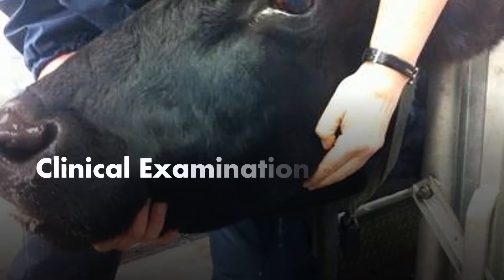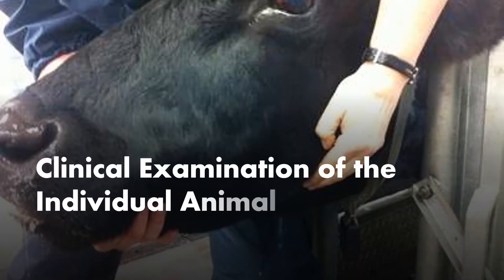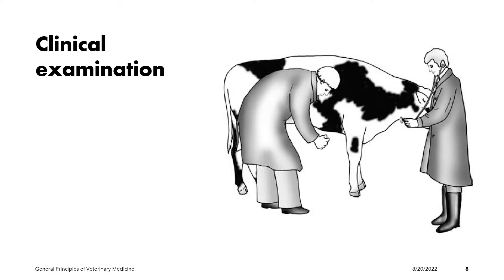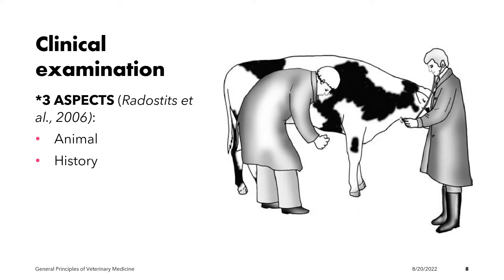The slides to follow will show some important points in the clinical examination of the individual animal. According to Radustich et al. in 2006, the clinical examination of the individual animal has three aspects: the animal, the history, and the environment.